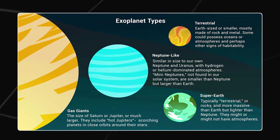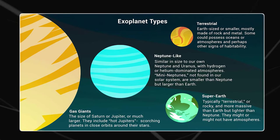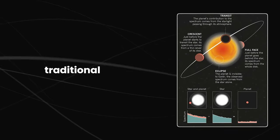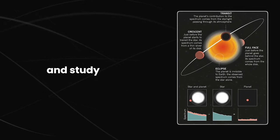The search for exoplanets is a key area of research for astronomers and astrophysicists. Before the advent of AI, traditional methods were used to identify and study exoplanets.